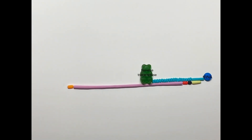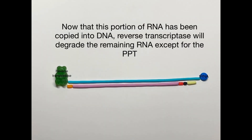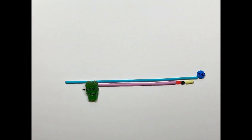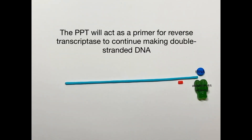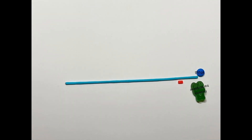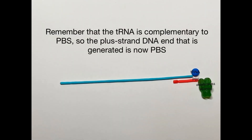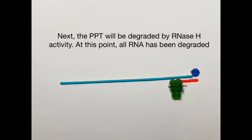Reverse transcriptase then copies the rest of the RNA genome into the first cDNA strand. At this point, all the RNA has been copied into DNA, so reverse transcriptase degrades the remaining RNA except for the PPT site. The PPT will then act as a primer for the second cDNA strand, demonstrating reverse transcriptase's DNA-based DNA polymerase activity. Since the tRNA is complementary to PBS, the end of the newly synthesized cDNA will be PBS.